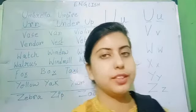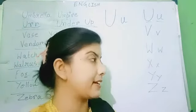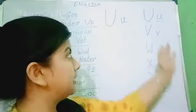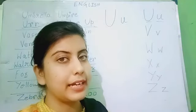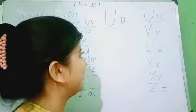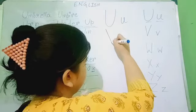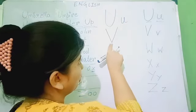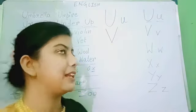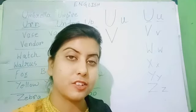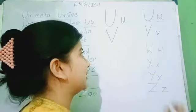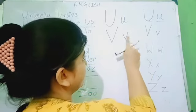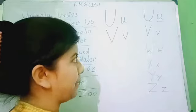Now, we will look at the next letter. That is V. This is capital V and this is small v. For capital V, we have to draw two slanting lines like this, and the small v is also like this but smaller. This is small v and this is capital V.